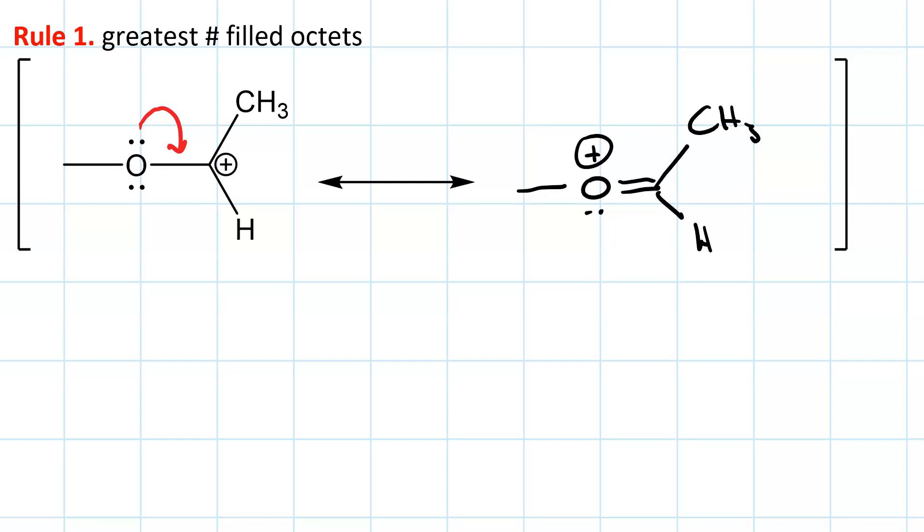Now, of these two resonance structures, the second one is more important, because everything has a complete octet. Whereas, when you have a carbocation, that is a sextet.